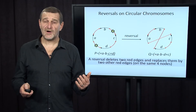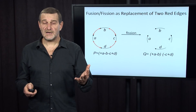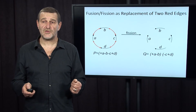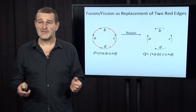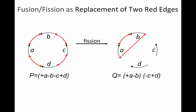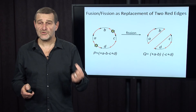Now let's talk about fission — breaking a single chromosome into two. A unichromosomal genome P is broken into a genome Q with two chromosomes. In the graph, from plus A we go to minus B and back, and from minus C we go to plus D and back. Geometrically, a single cycle is broken into two cycles. Once again, we remove two red edges and add two new red edges.